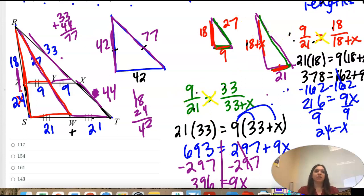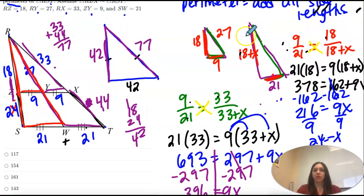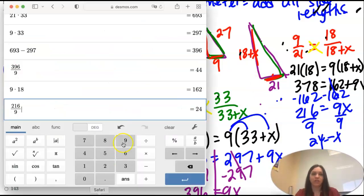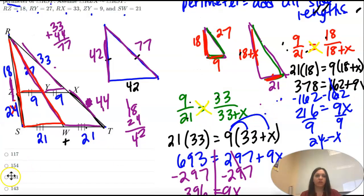So perimeter, remember, means add them all up. Let's add up all the sides. I wrote it up here. So our sides are 42 and 42 and 77. 161. That one took a while. Let's see what our next one looks like.